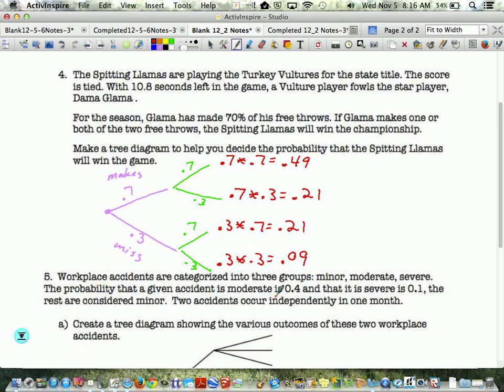You would call this a make then a miss. So we take 0.7 times 0.3, you get 0.21. Then you take the next branch, which would be miss then make. So that one's 0.3 times 0.7, which is also 0.21. So notice those two branches in the middle are basically the same—make-miss is the same as miss-make. And then the last one, what's the probability that he misses both shots? That's 0.3 times 0.3, which is 0.09.